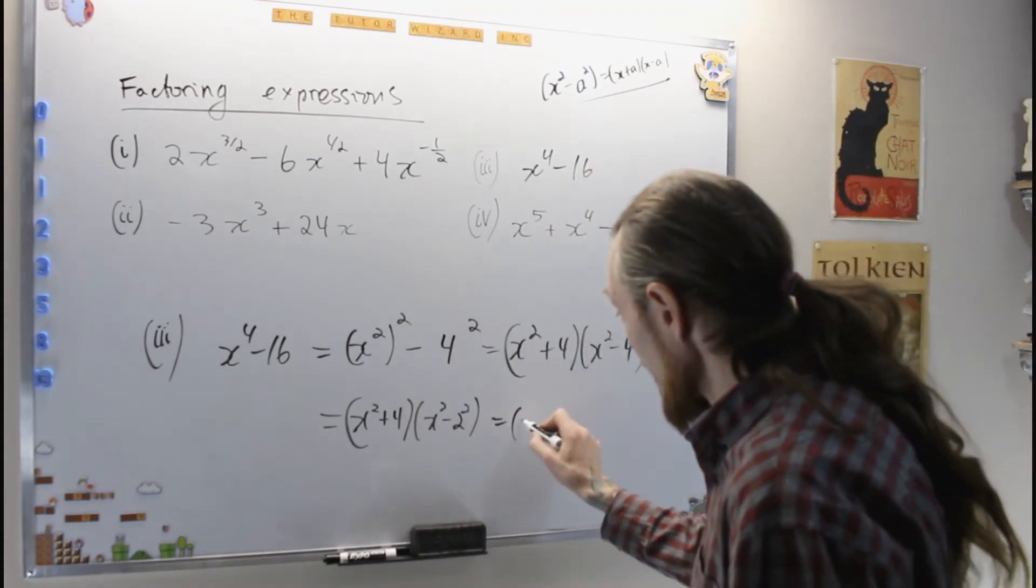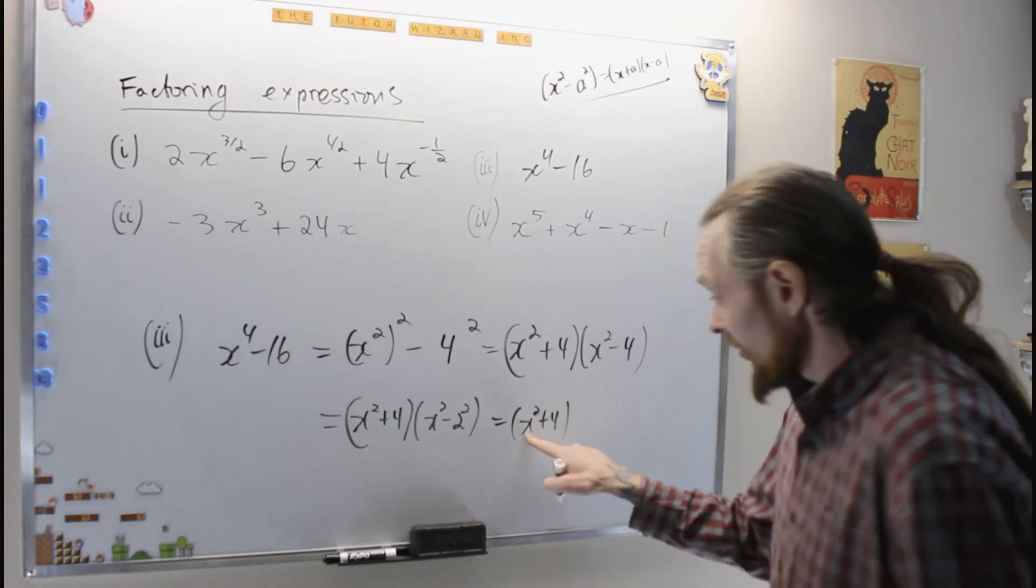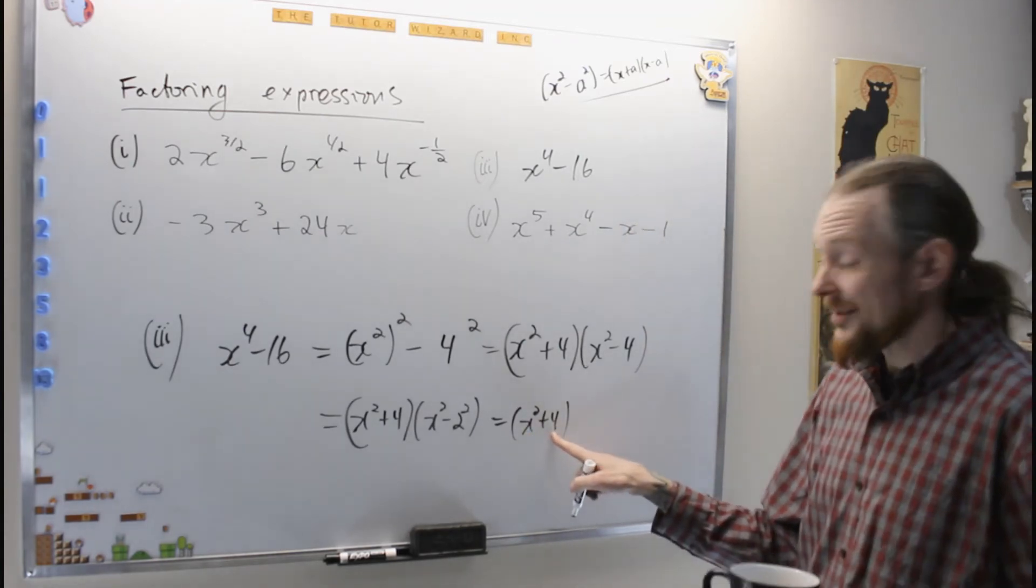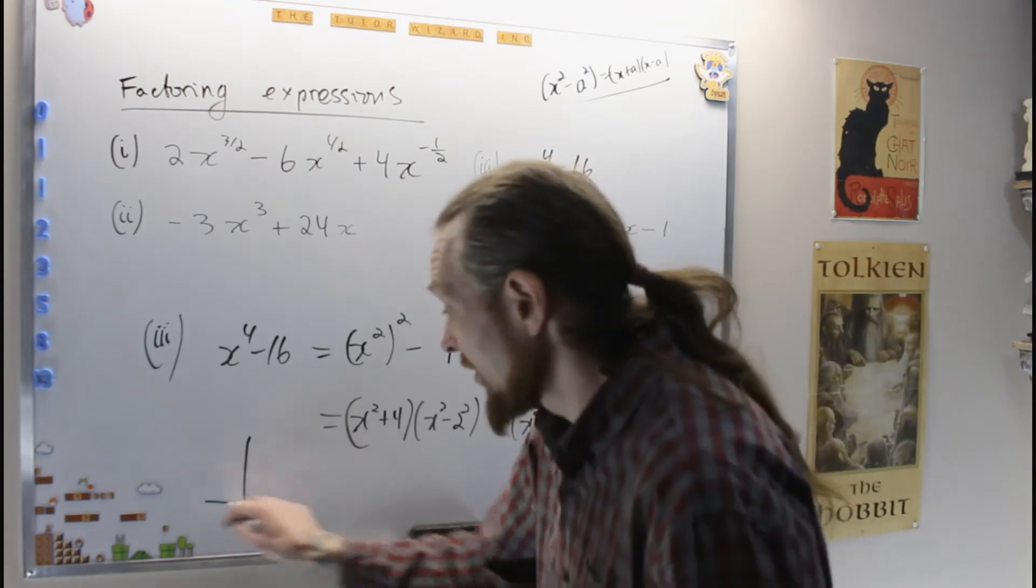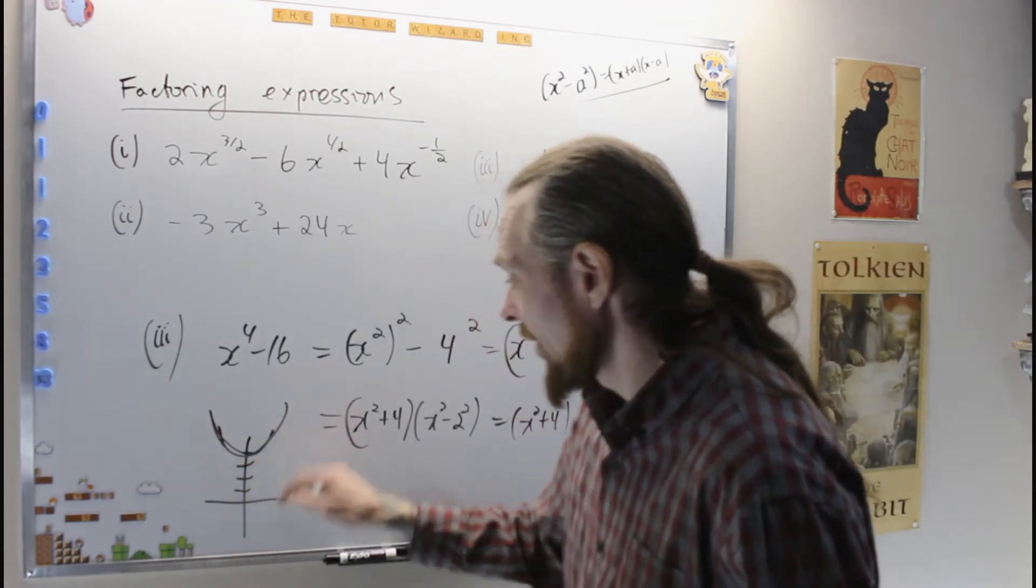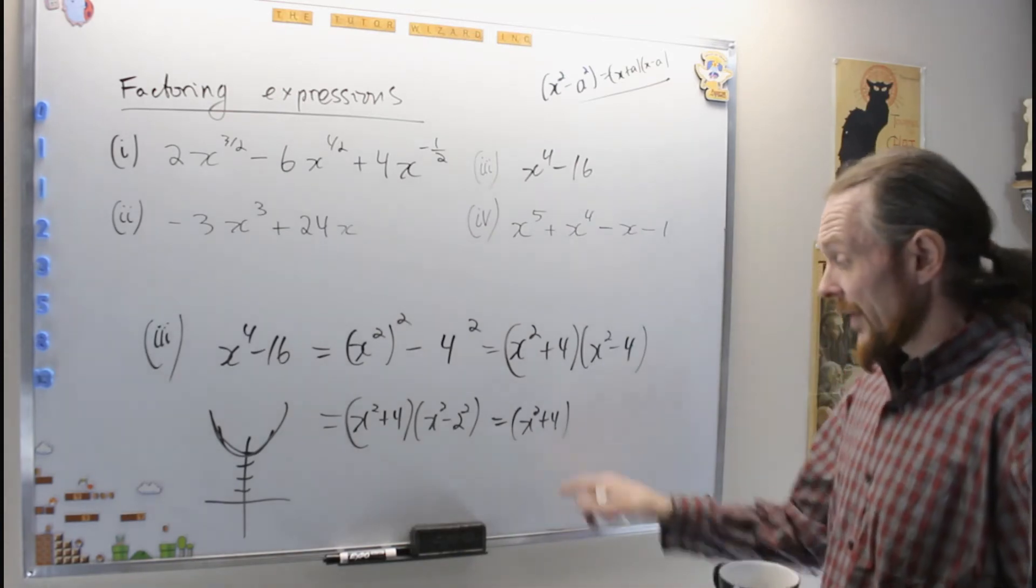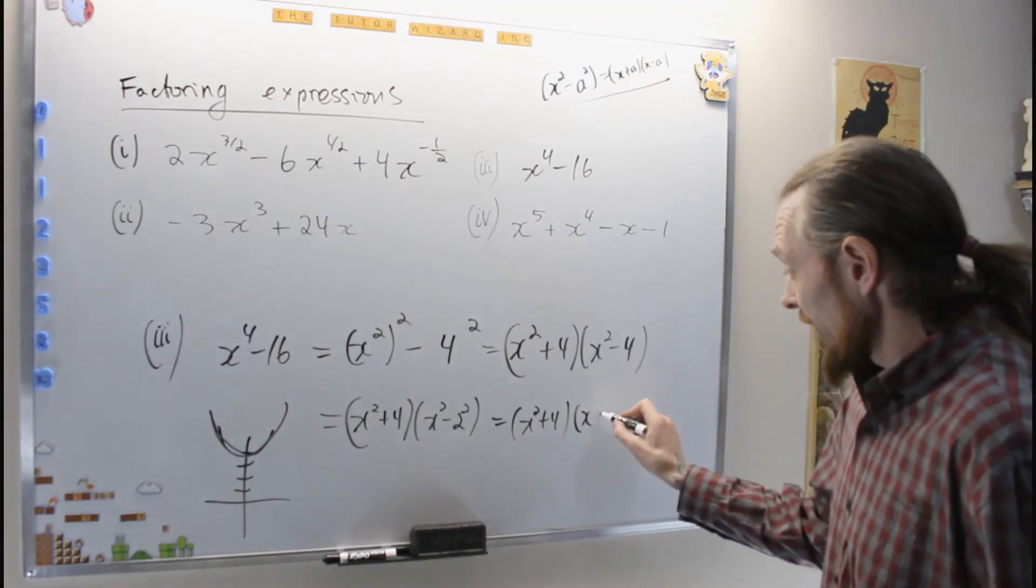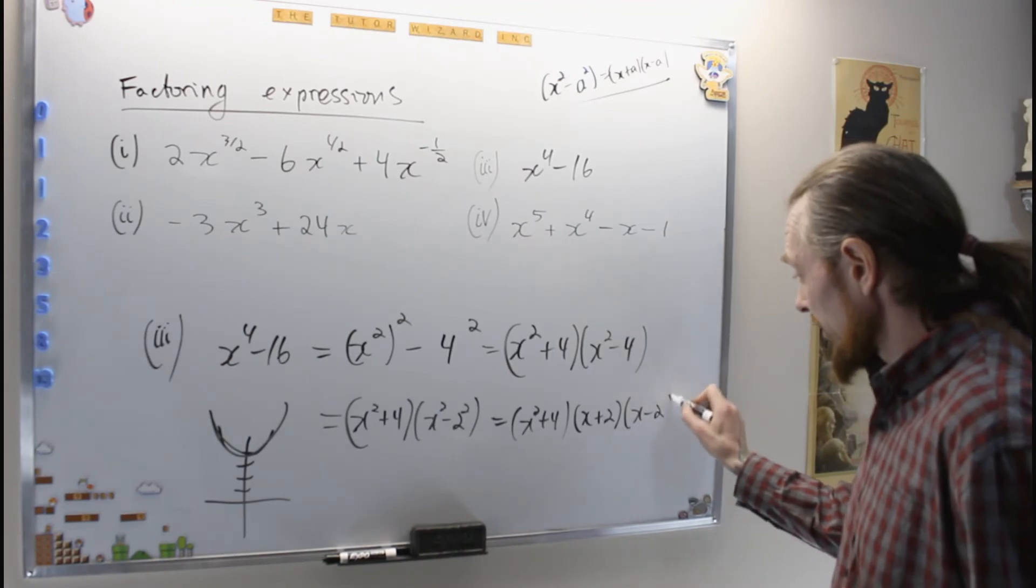And so that is x squared plus 4. This is irreducible. The discriminant is negative, so we can't reduce this. It has no zeros. x squared plus 4, it never touches the x-axis. So this one can be factored into x plus 2, x minus 2.